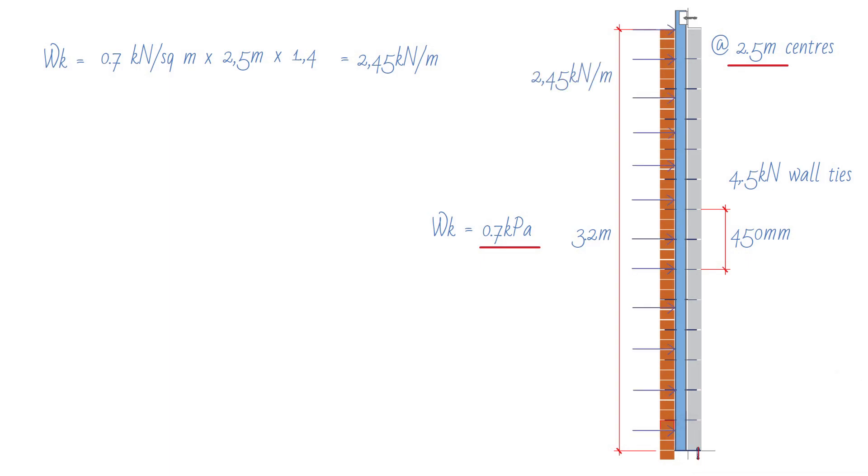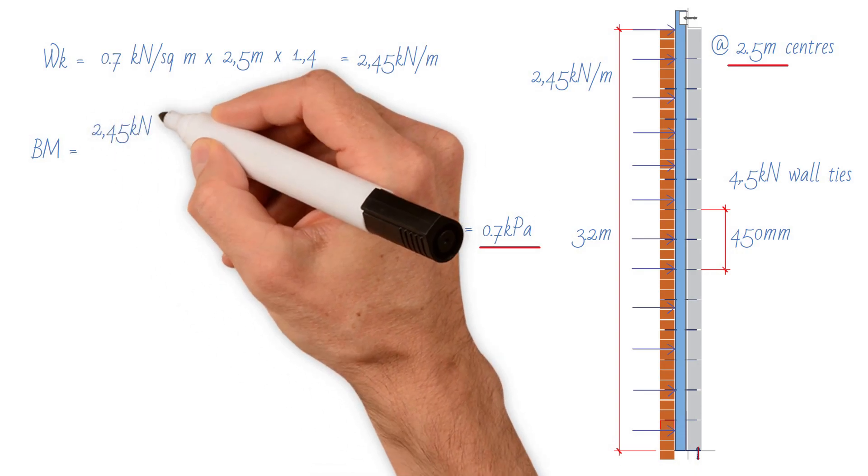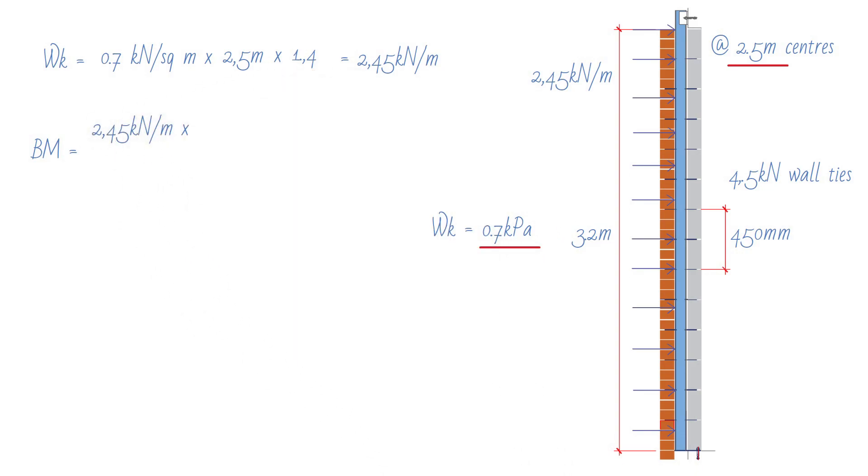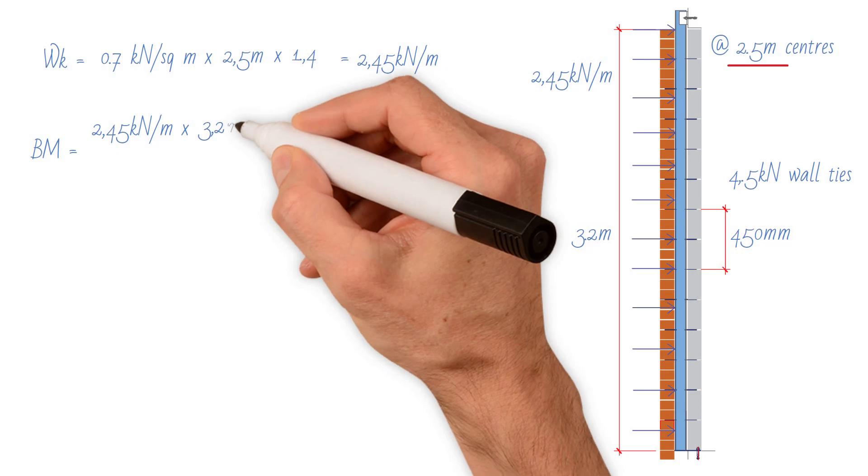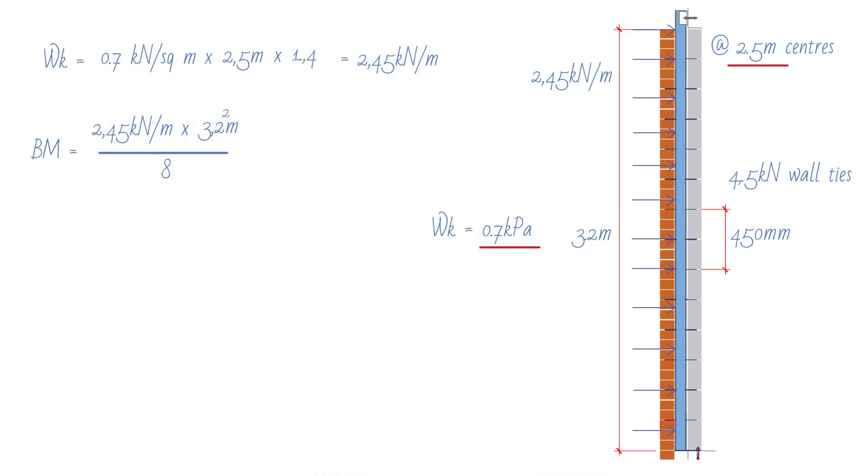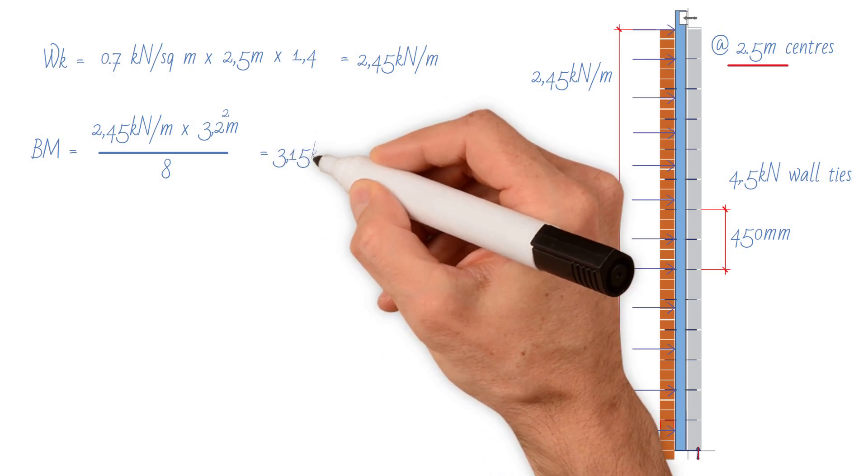Now, we should be able to find applied bending moment, which is 2.45 kilonewtons per meter times the wall height 3.2 meters squared divided by 8. This gives us a value of 3.15 kilonewton meter.